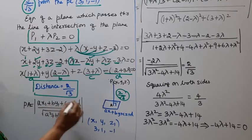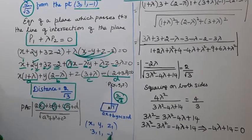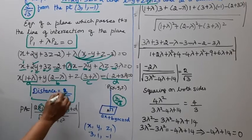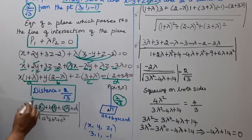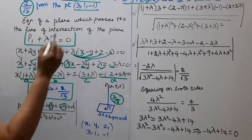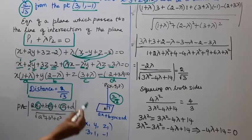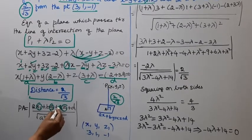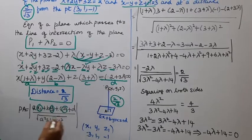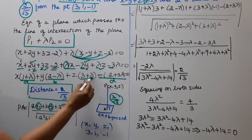The coefficients are A, B, C, D and the point is x1, y1, z1 equal to (3, 1, -1). Substituting into the distance formula: (1 plus lambda) times 3, plus (2 minus lambda) times 1, plus (3 plus lambda) times (-1), minus (2 plus 3 lambda), all divided by root of (1 plus lambda) squared plus (2 minus lambda) squared plus (3 plus lambda) squared, equals 2 by root 3.